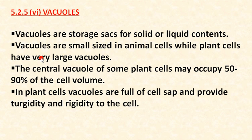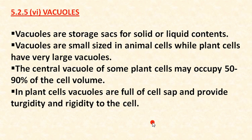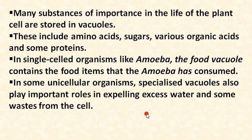The central vacuole of some plant cells may occupy 50 to 90 percent of the cell volume — that is how large vacuoles can be in a plant cell. In plant cells, vacuoles are full of cell sap and provide turgidity and rigidity to the cell, helping maintain the cell's overall structure and strength.